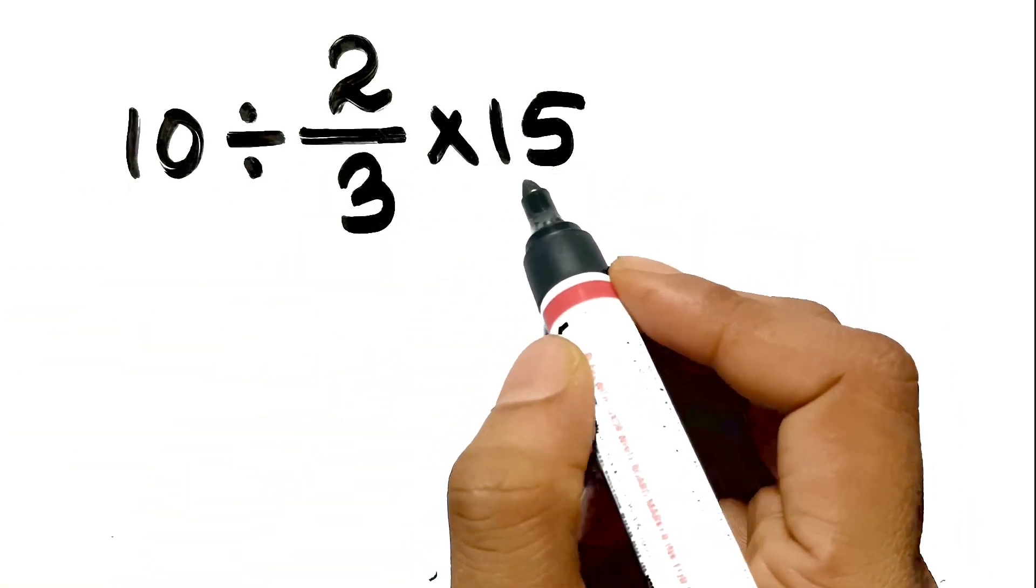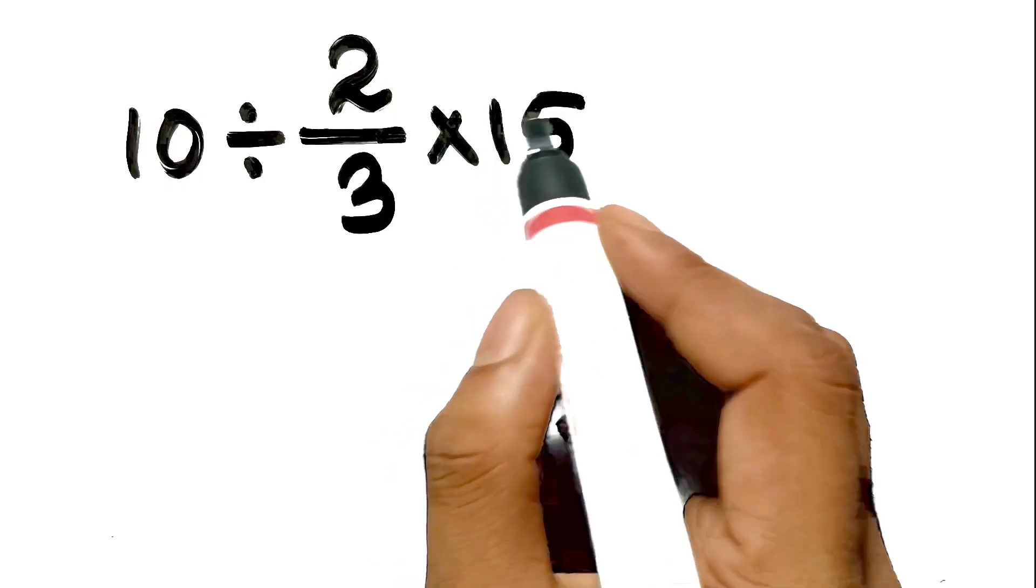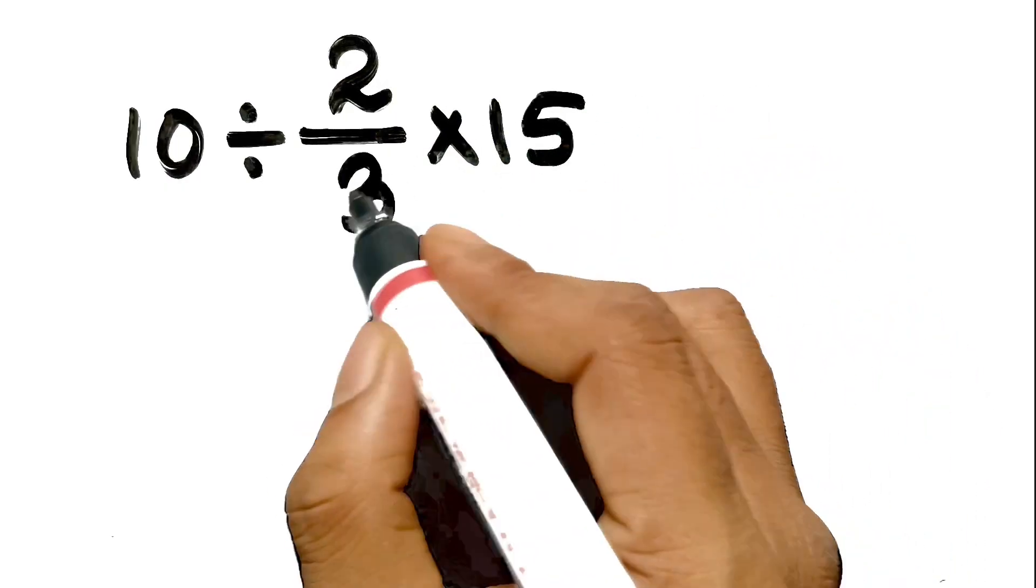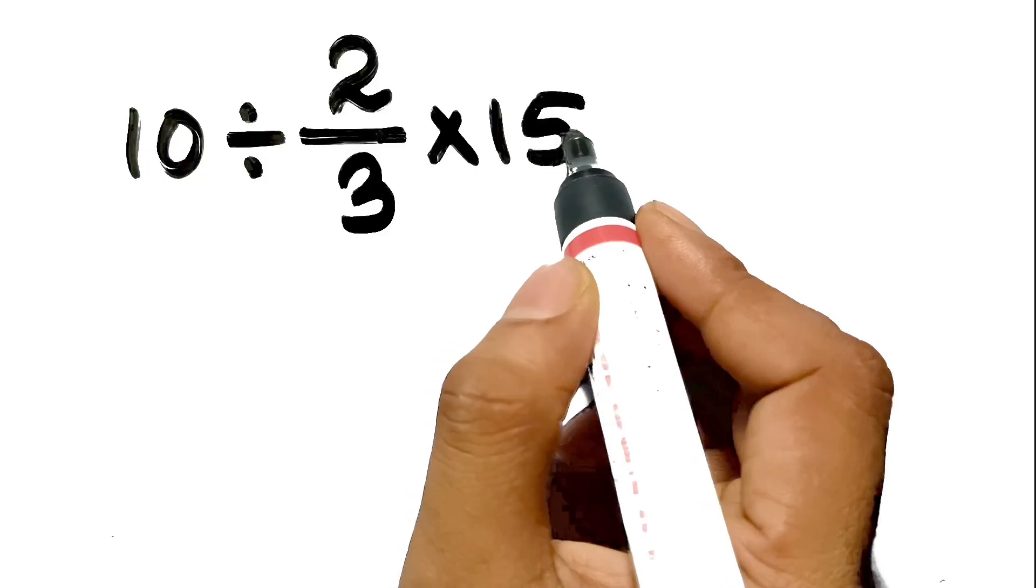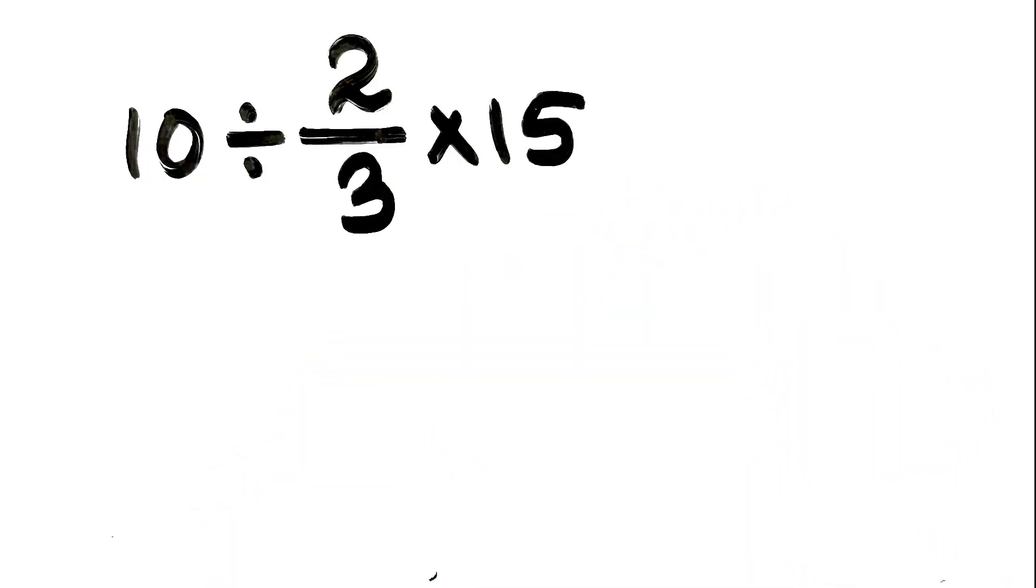When we look at this problem, our eyes naturally focus on the fraction 2 over 3 and the number 15 at the end. We see that 3 is in the denominator, and 15 is a multiple of 3. It feels intuitive to simplify this first.